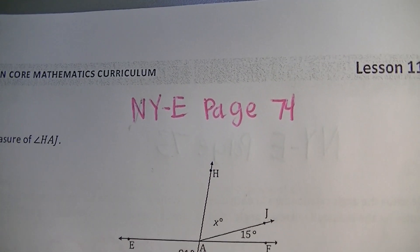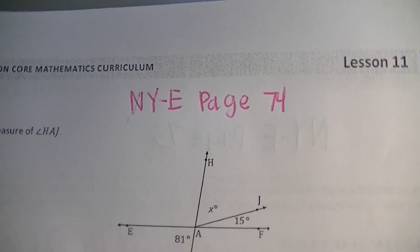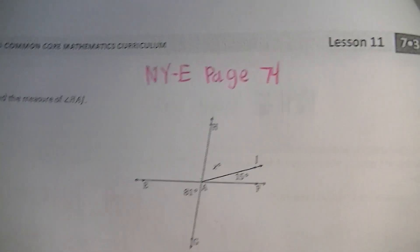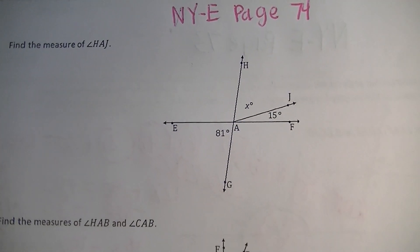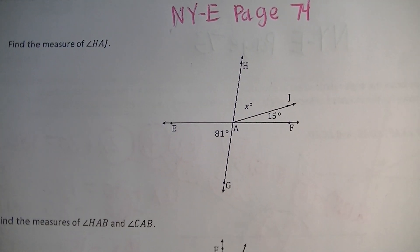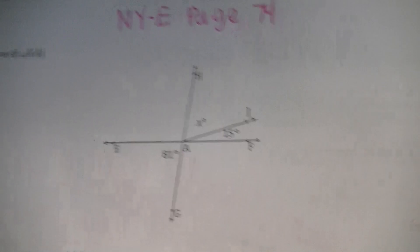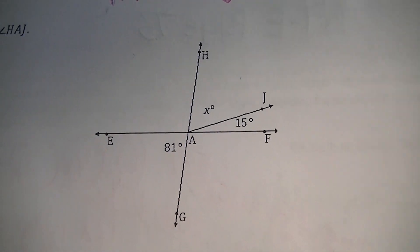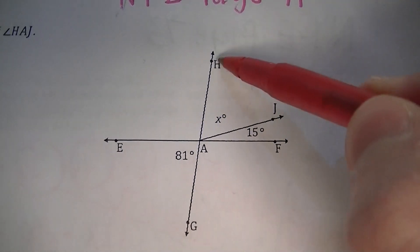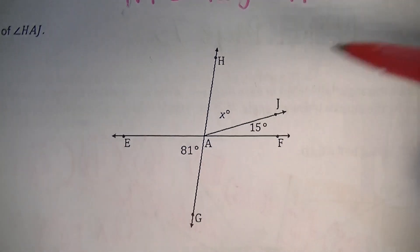This video will show you how to do the problems on page 74 of your math book. The first problem says find the measurement of angle HAJ. Angle HAJ is located right there.